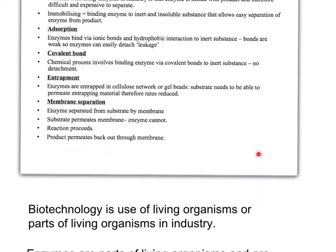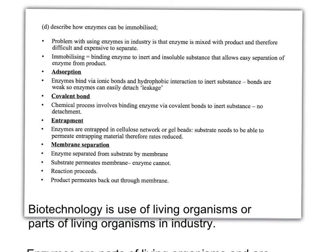That covers our slide on how enzymes can be immobilized. Remember: adsorption uses ionic or hydrophobic bonds — quite weak bonds between the enzyme and our inert substance. Covalent bonding is a more permanent structure. Entrapment is when the enzymes are trapped within a meshwork of some inert insoluble substance. And membrane separation is when we use a phospholipid bilayer through which substrates permeate, react with the enzyme, and the products then diffuse back out through the membrane.